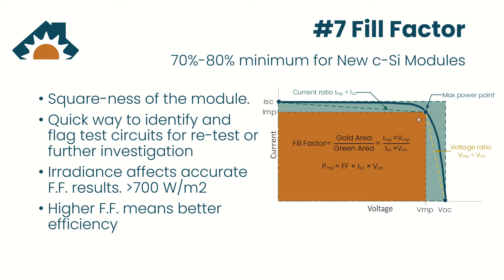The best fill factor for a solar cell is about 75% to 85%. But a good minimum is 70%. It really just depends on the module that you have.